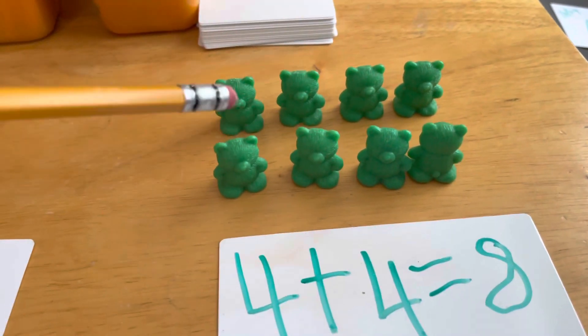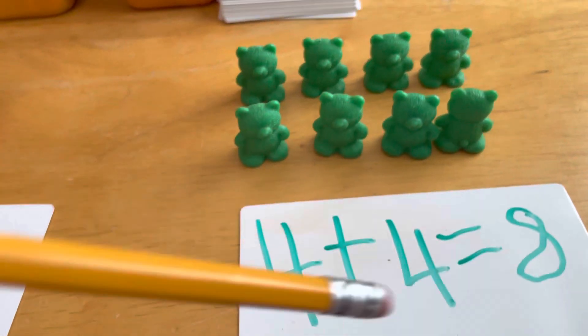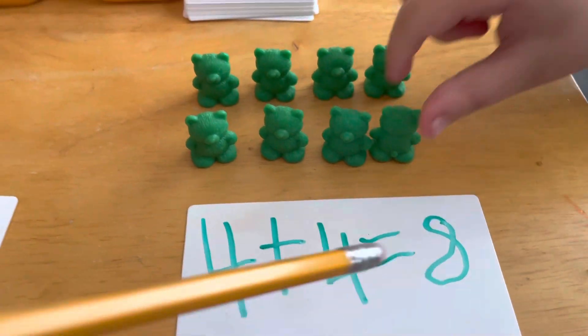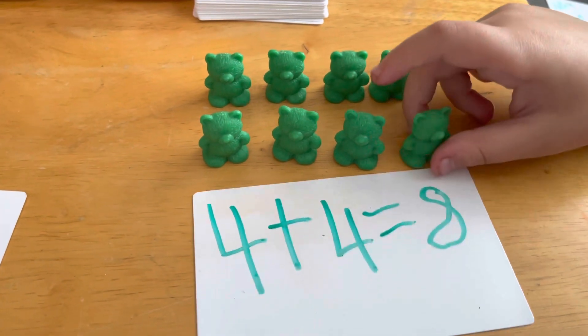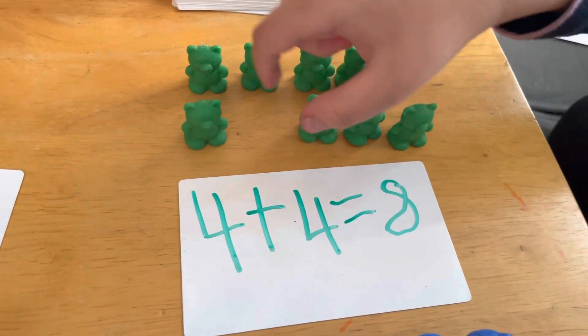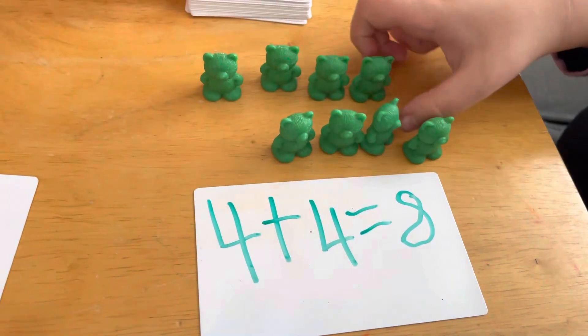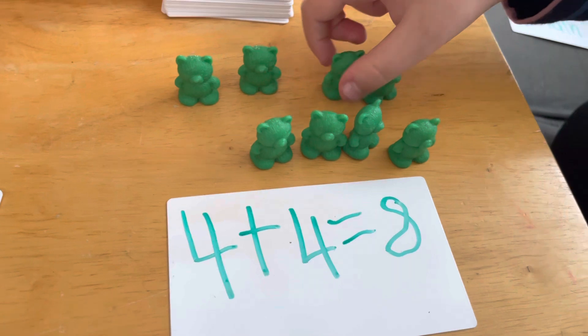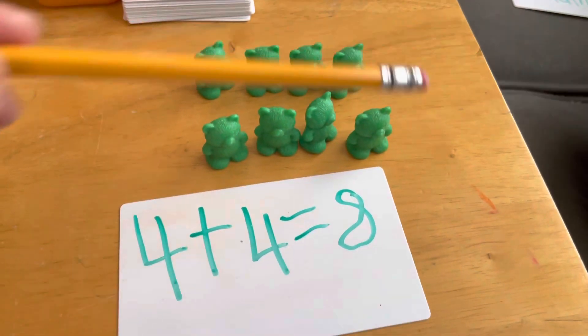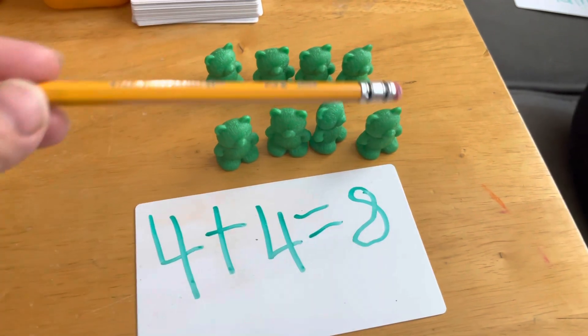Now what do we got over here? Four plus four equals eight. Okay, count the bears. One, two, three, four, five, six, seven, eight. The answer is eight.